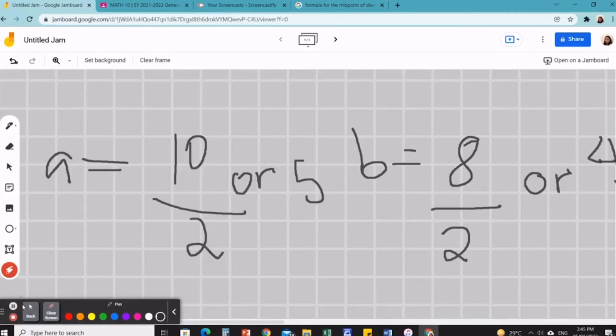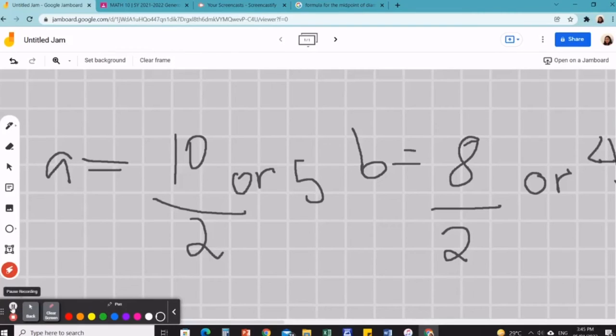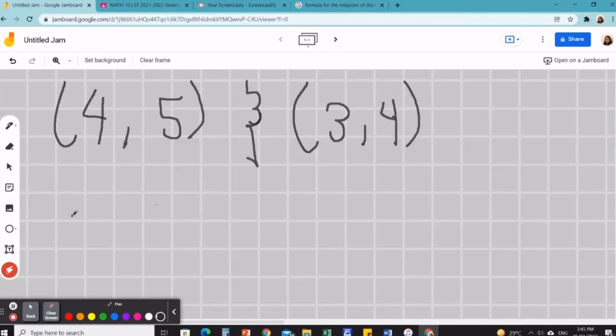Let's have a few more examples, and then we could end the video. Another example is the set of endpoints, which is 4, 5, and 3, 4. So, label them.